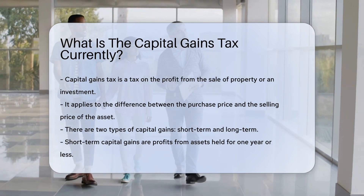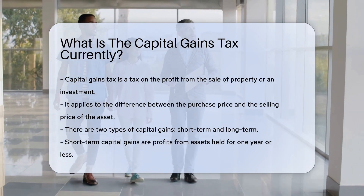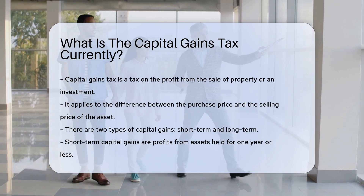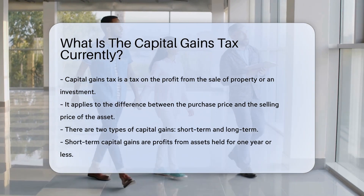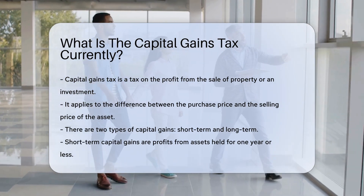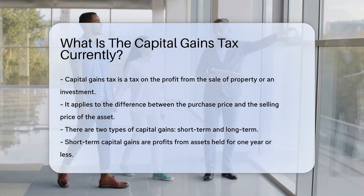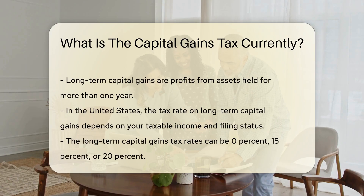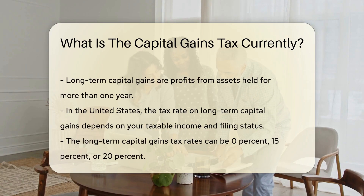There are two types of capital gains: short-term and long-term. Short-term capital gains are profits from assets held for one year or less. Long-term capital gains are profits from assets held for more than one year.